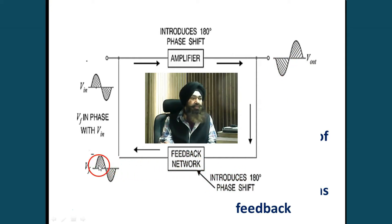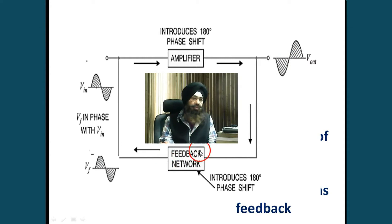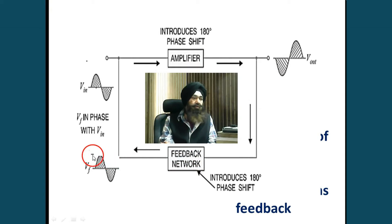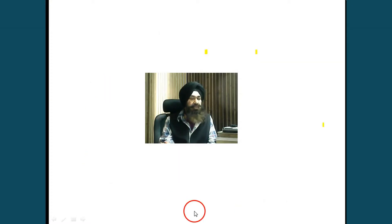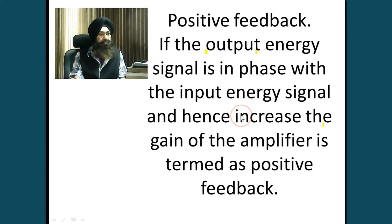So the total phase shift becomes 360 degrees. This network also decides what fraction of the output signal is taken back. 180 degree phase shift by the amplifier, 180 degree phase shift by the network — total phase shift is 360 degrees. When the total is 360 degrees, the feedback signal comes in phase with the input signal. This type of feedback is called positive feedback, and it increases the gain of the amplifier.